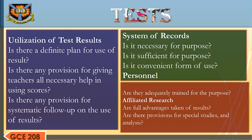System of Records: Is it necessary for purpose? Is it sufficient for purpose? Is it in a convenient form for use? Personnel: Are they adequately trained for the purpose? Affiliated Research: Are full advantages taken of results? Are there provisions for special studies and analysis?